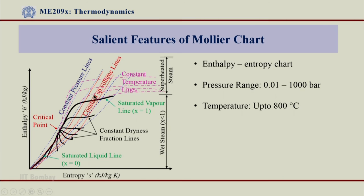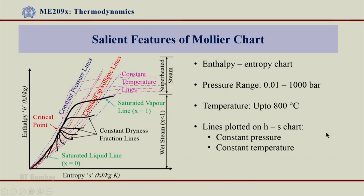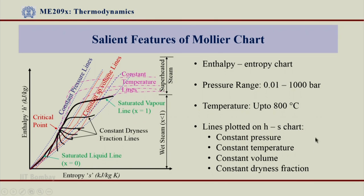So I can actually just find a point and read all these properties directly from this graph, which I cannot do from the steam table. From the steam table I have to locate these values and interpolate. But here, the moment I know the point where it lies, I get an idea straight away of which zone it is in, and corresponding to that point I will read the properties. So lines plotted on the HS chart include constant pressure lines, constant temperature lines, constant volume lines, and constant dryness fraction lines — all this information I can get directly from the Mollier chart.